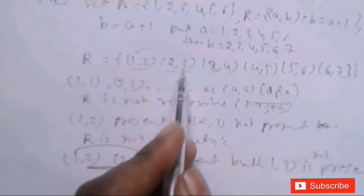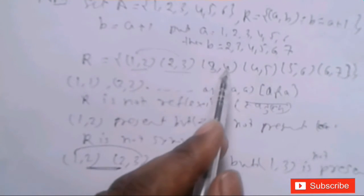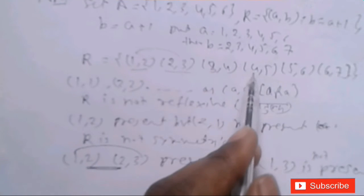इसी प्रकार (2,3) और (3,4) present हैं, परन्तु (2,4) present नहीं है। (3,4) present है और (4,5) present है, पर (3,5) present नहीं है। इसलिए हम कह सकते हैं कि R is not transitive.